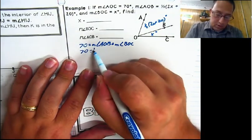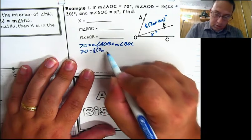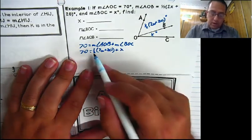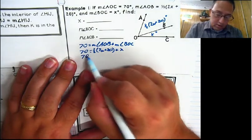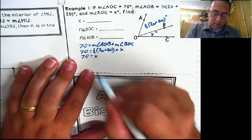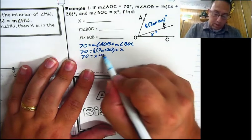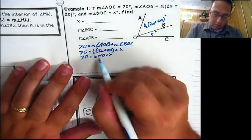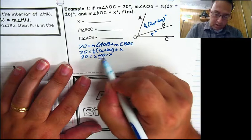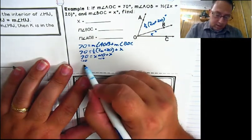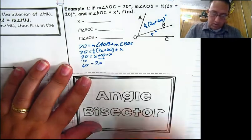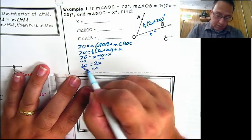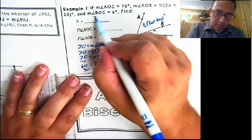Plugging in: 70 equals ½(2x + 20) plus x. Distribute the ½: 70 equals x + 10 + x. Move the 10 over: 60 equals 2x. Divide by 2: x equals 30.